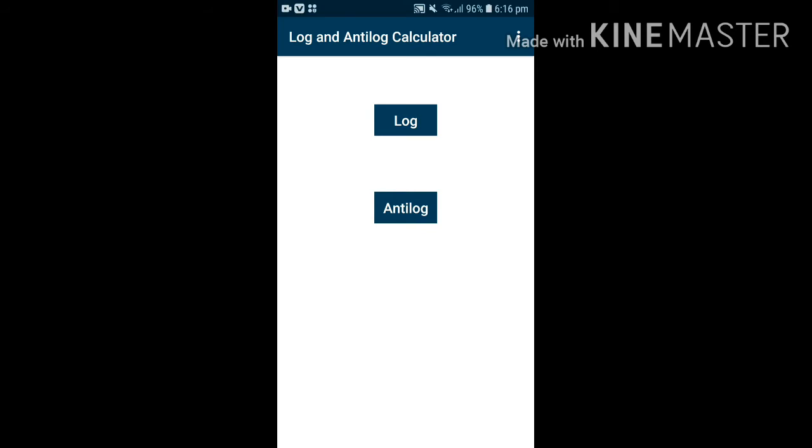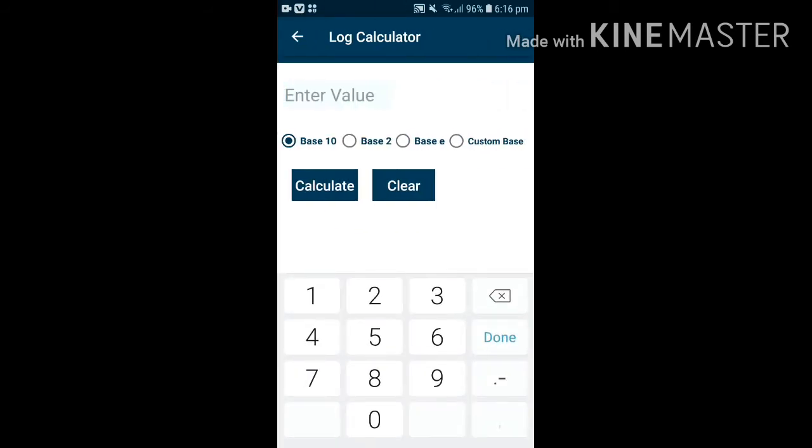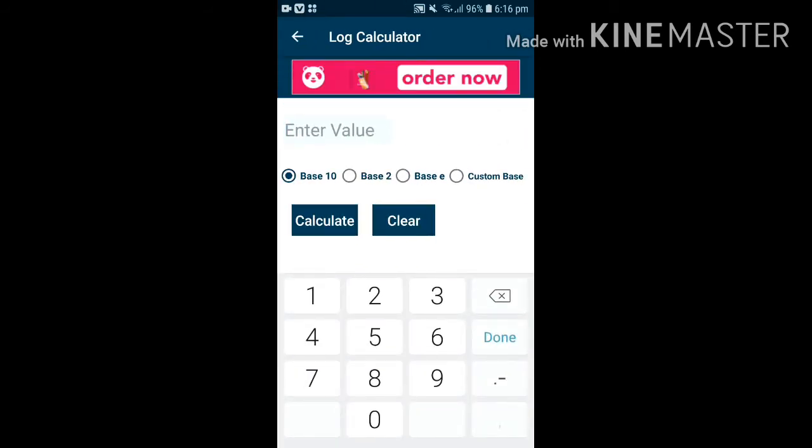This calculator has different bases that we have. You can see we will search for positive numbers. We have base 10, base e, base 2, and custom base. You can see because in books we have other bases. Let's start with base 10.